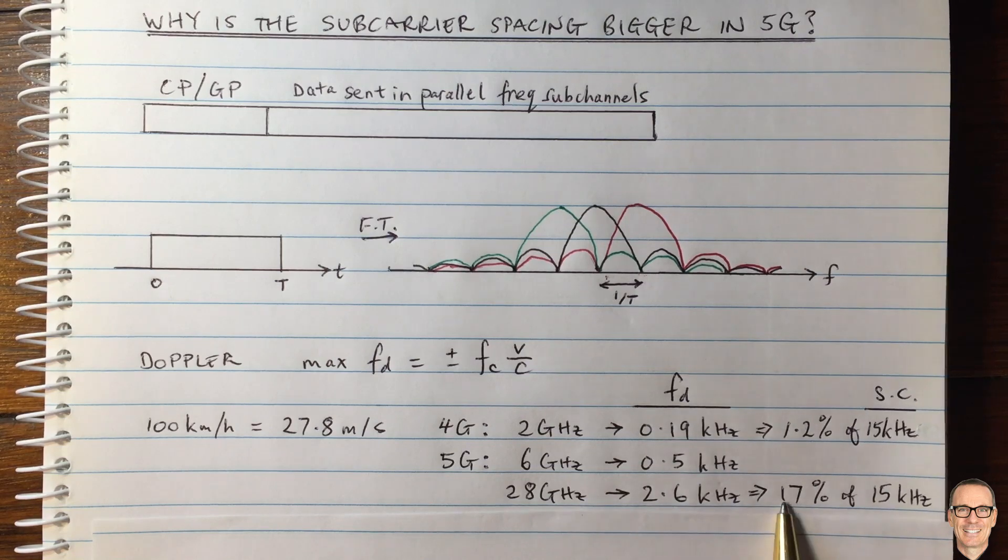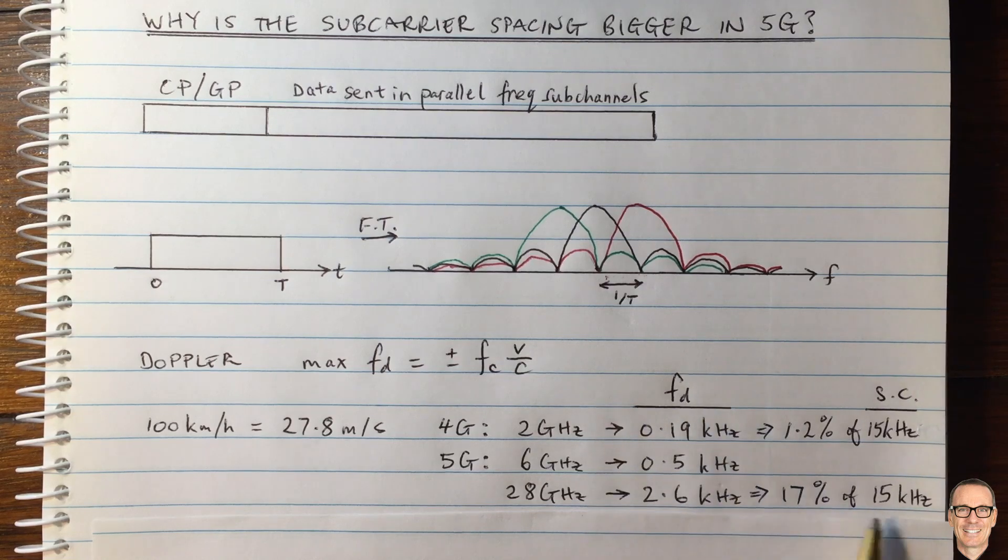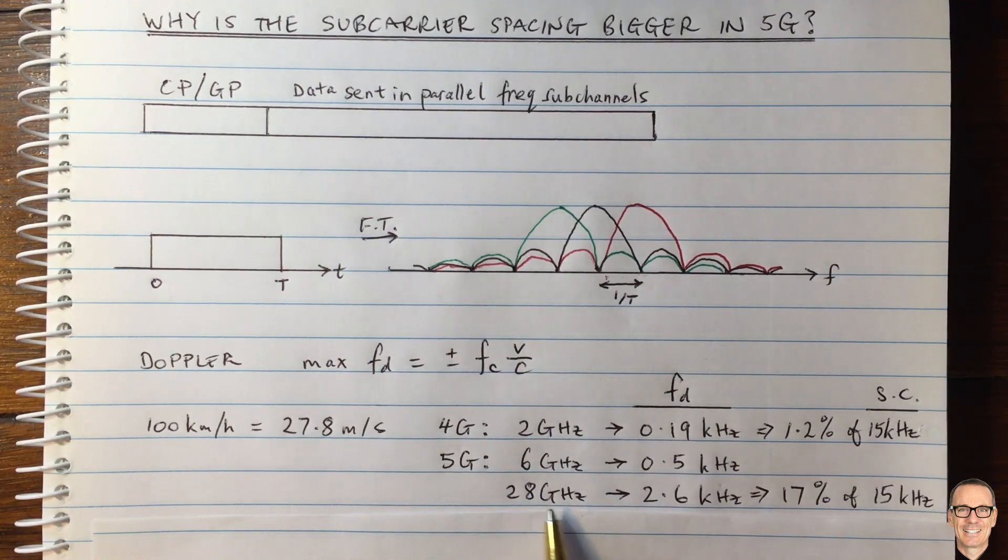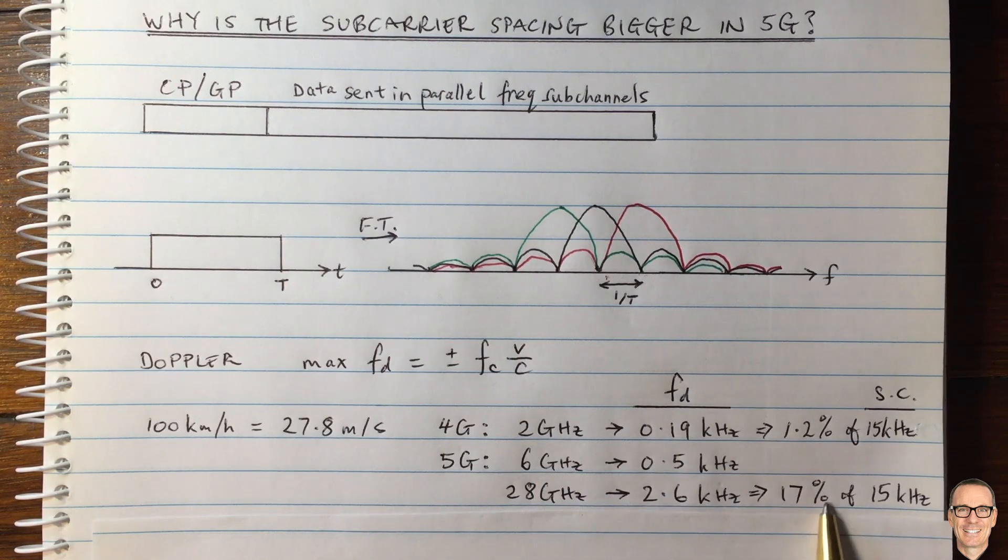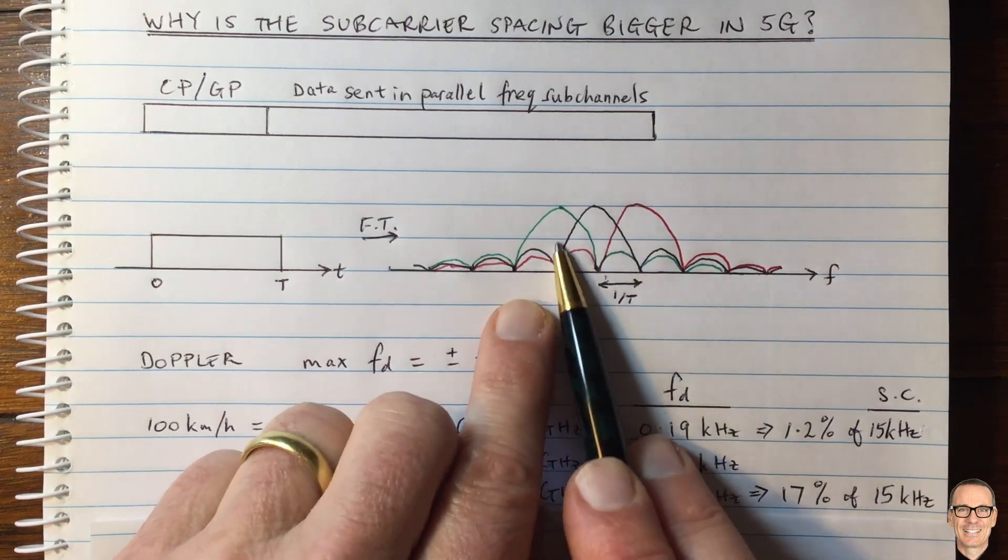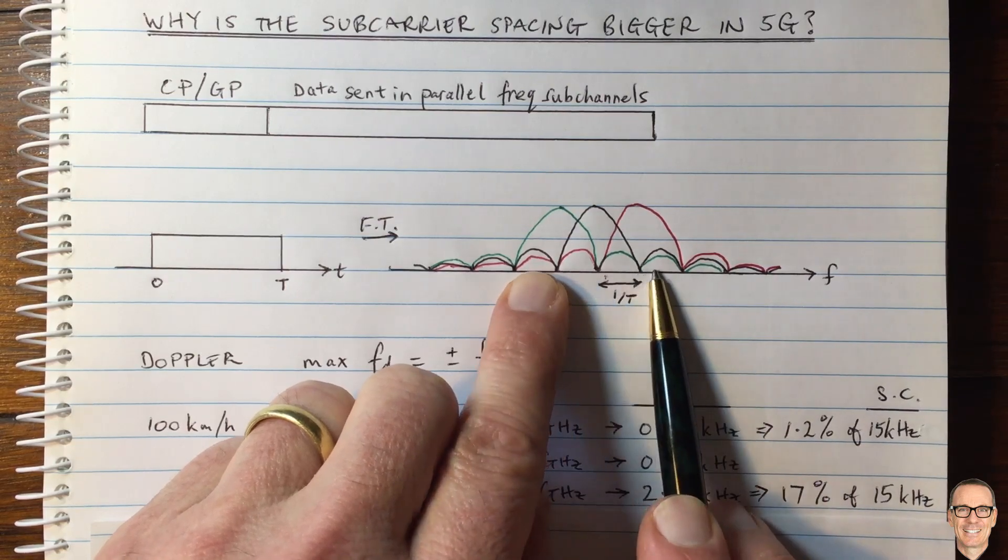Well, this would be 17% of a 15 kilohertz sub-carrier spacing. So if we kept the same sub-carrier spacing as in 4G, then if we tried to use that at 28 gigahertz, we'd have 17% of Doppler spread. So the width of an individual sub-carrier would be spread out by an extra almost 20%.